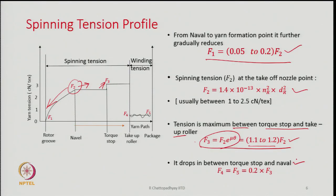After the torque stop or twist trap, tension drops: F4 and F5 are only 0.2 times F3. So whatever F3 is, there is a sudden drop in tension. This means actual winding tension is much less than the tension in the yarn between the torque stop and the take-up roller. The maximum tension is not in the winding zone — tension is maximum prior to the winding zone.